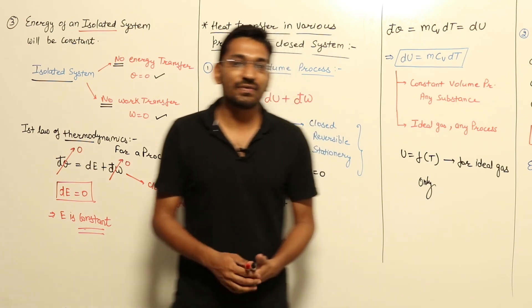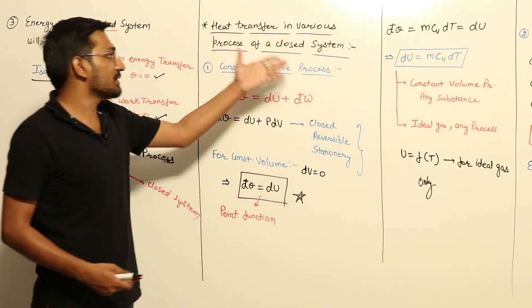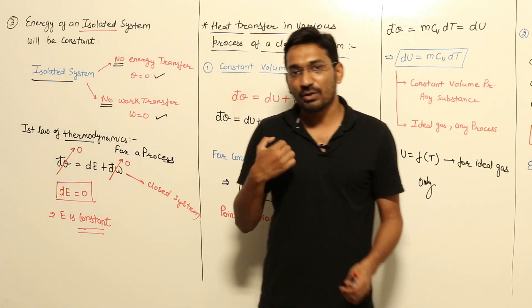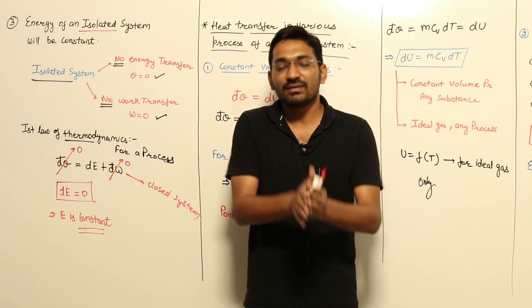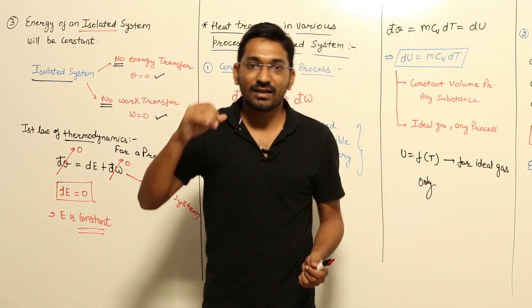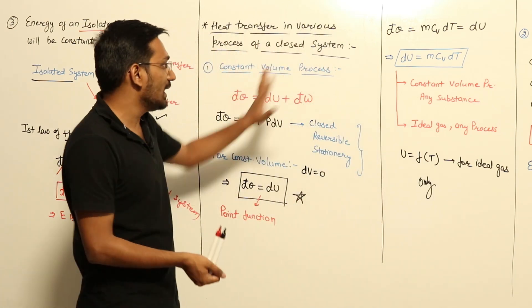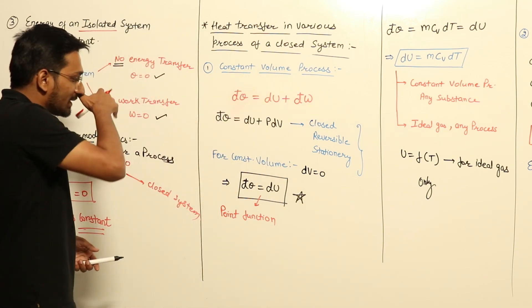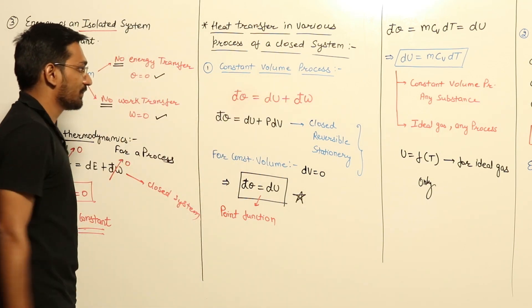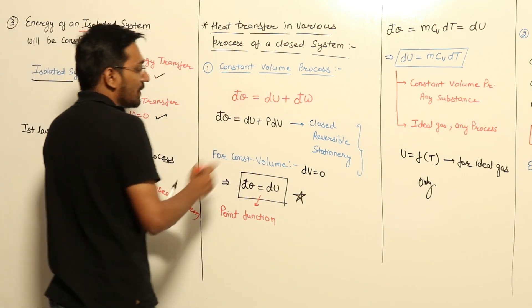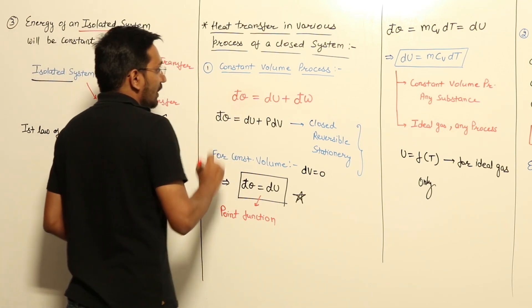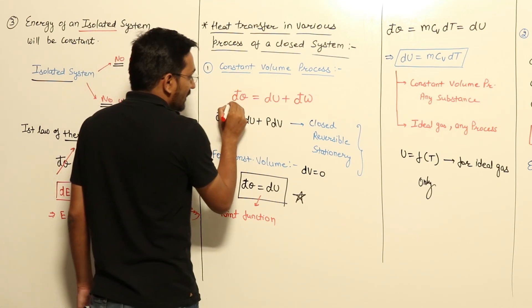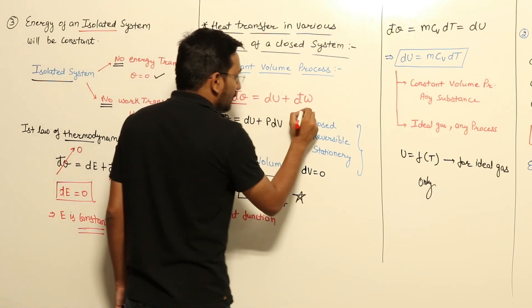Now we are more concerned about heat transfer in various processes in the closed system. We want to find the value of heat transfer for various processes in a closed system, dealing only with the closed system. First of all, I am taking the constant volume process. For a process, the first law of thermodynamics is DQ equal to DU plus DW.